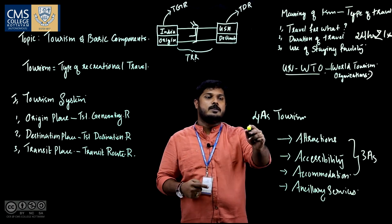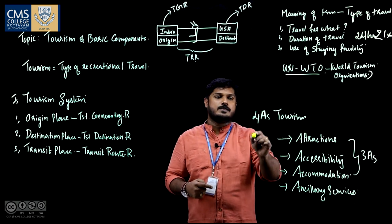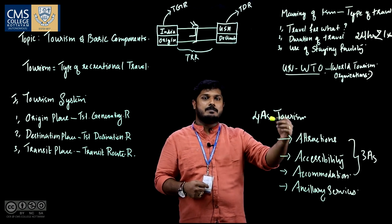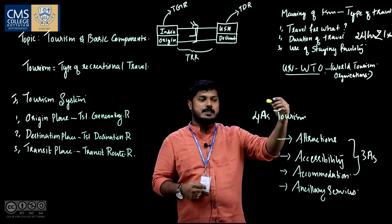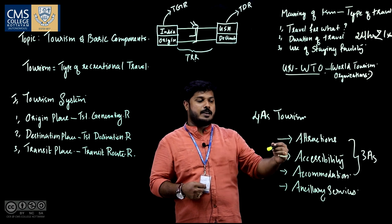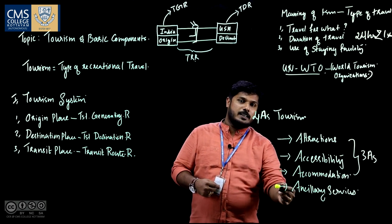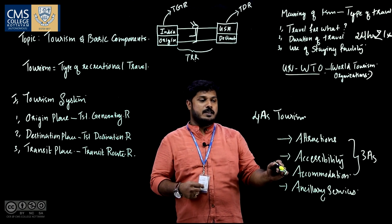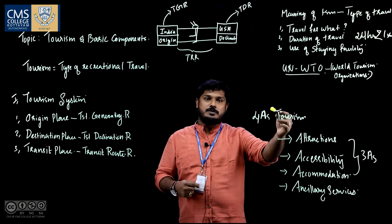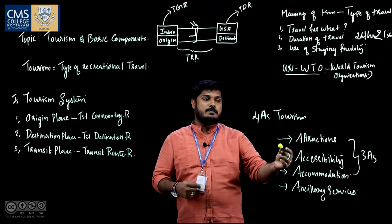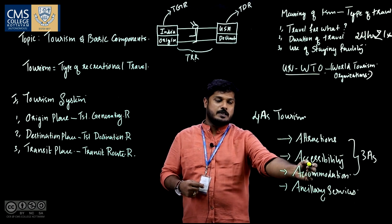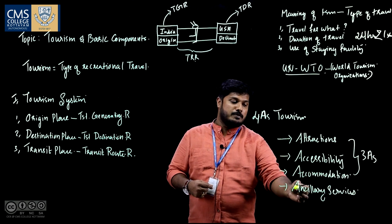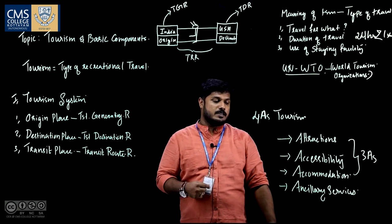In the last portion, we are going to discuss the four A's of tourism. We already mentioned the basic components — attraction, accessibility, and accommodation — and a recently added component: ancillary services. So the four A's of tourism are attraction, accessibility, accommodation, and ancillary services.